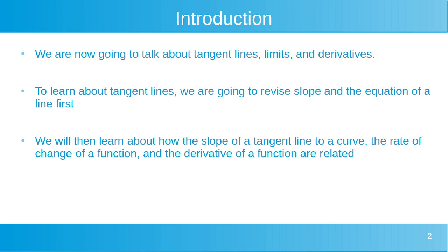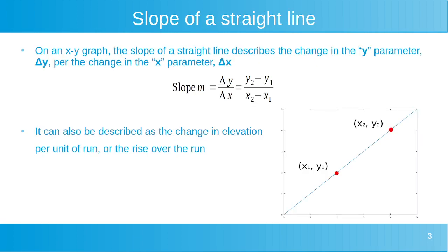To learn about tangent lines, we're going to revise slope, and we're going to revise the equation of a line. We're then going to learn about how the slope of a tangent line to a curve, the rate of change of a function, and the derivative of a function are related. To revise the slope of a straight line: on an x-y graph, the slope of a straight line describes the change in the y parameter, delta y, per the change in the x parameter, delta x. So our slope, denoted by the variable m, is equal to delta y divided by delta x.